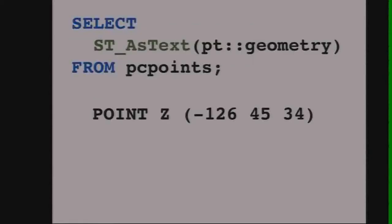If you've got the PointCloud PostGIS extension enabled, then you can cast your PC points over to PostGIS points. This is useful for visualization. All the visualizations later were done by casting data from PointCloud into PostGIS and then visualizing it using QGIS. Taking the point, casting it across, you get a point Z.